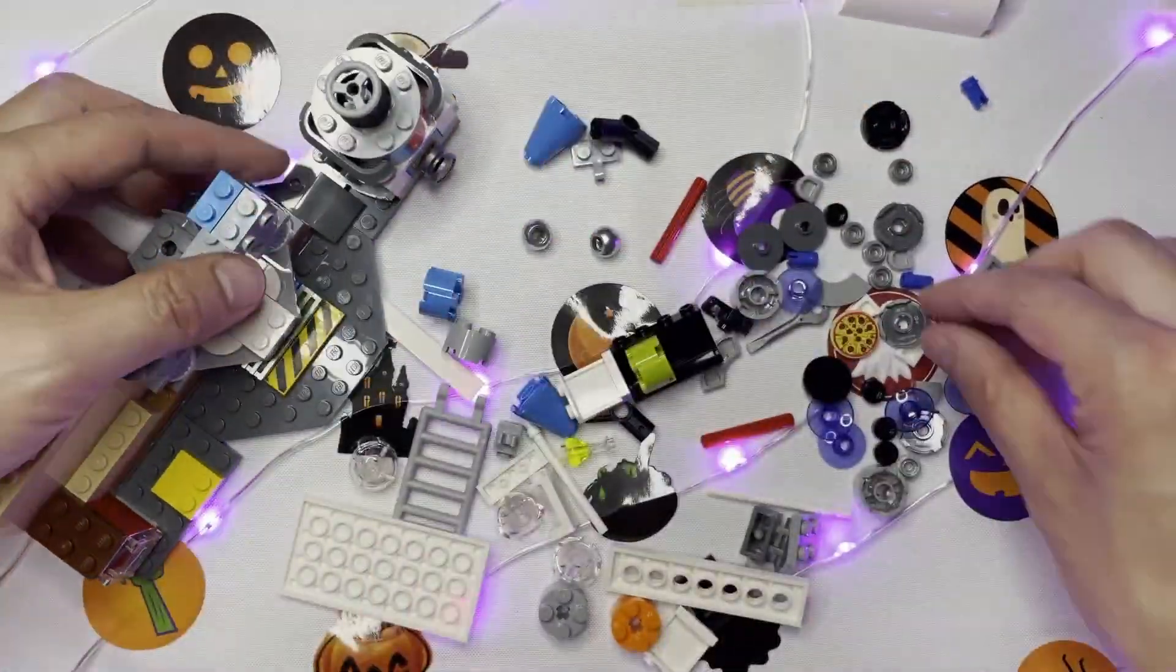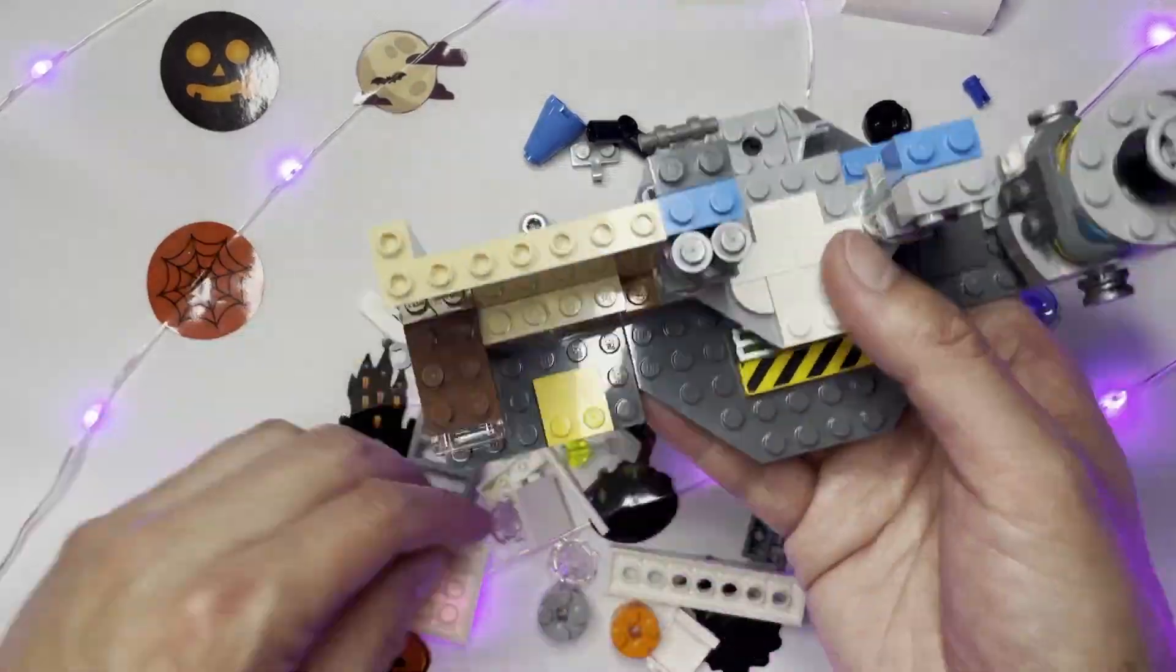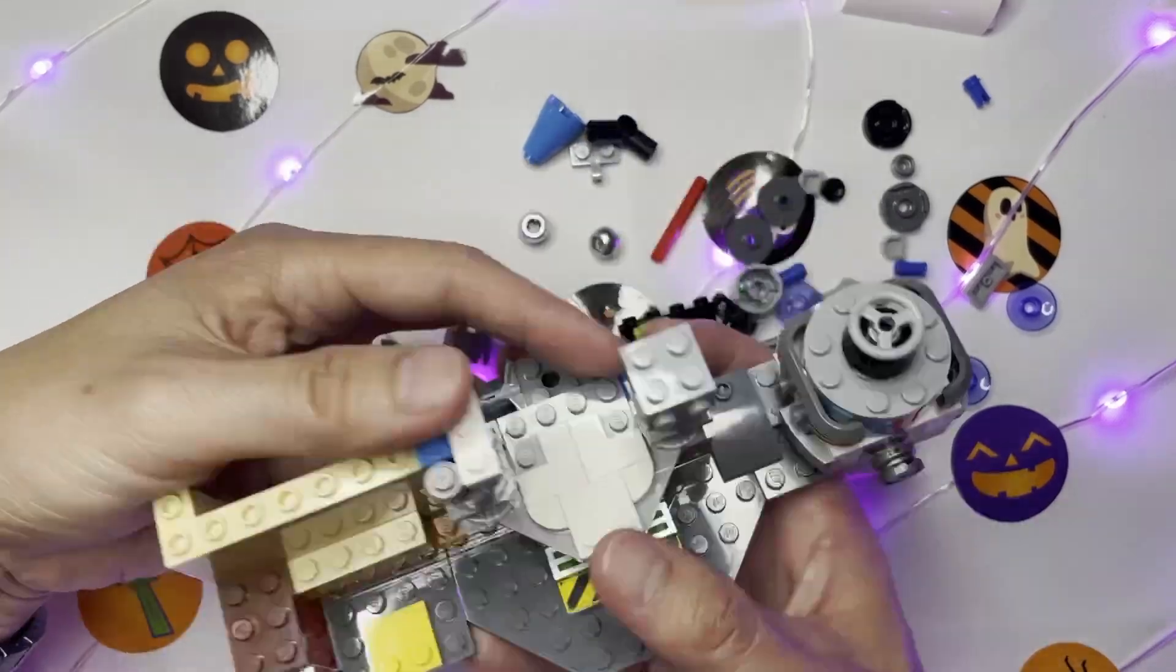I also happened to like Mad Scientist Labs with their weird lightning catchers and various Erlenmeyer flasks, jars, and various colored test tubes.